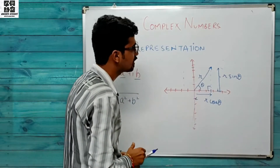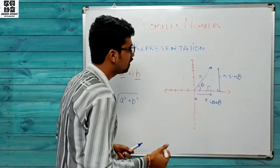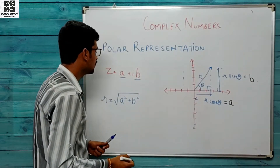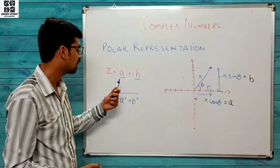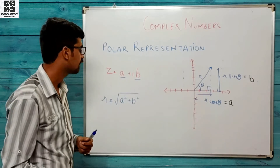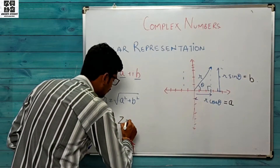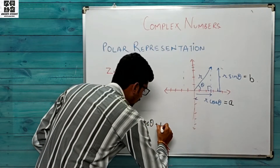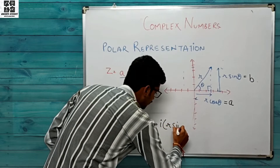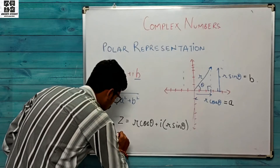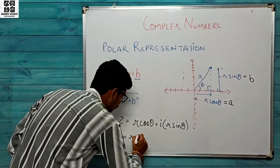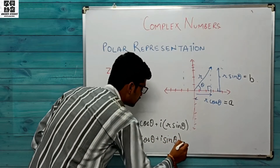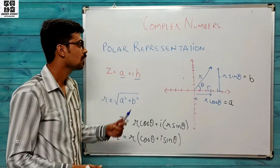Similarly, vertical wali line r times of sin theta hogi. Toh r sin theta aur r cos theta — yeh values a aur b ke equal hongi respectively. Toh z = a + ib mein a aur b ki in values ko substitute kar denge: z = r cos θ + i·r sin θ. R common lene par final polar representation of a complex number hoga: z = r(cos θ + i sin θ).